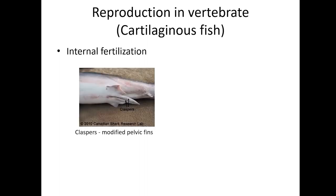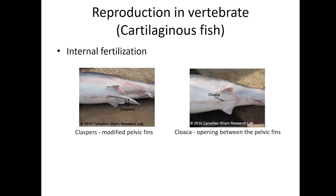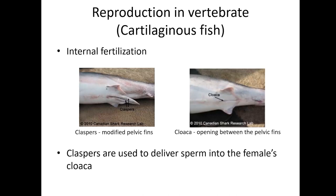Unlike most bony fishes, cartilaginous fish reproduce using internal fertilization. Male cartilaginous fish have a pair of external reproductive organs called claspers, located between their pelvic fins. Females have a cloaca, an opening that serves digestive and reproductive functions. The male uses the clasper to transfer sperm into the female's cloaca.